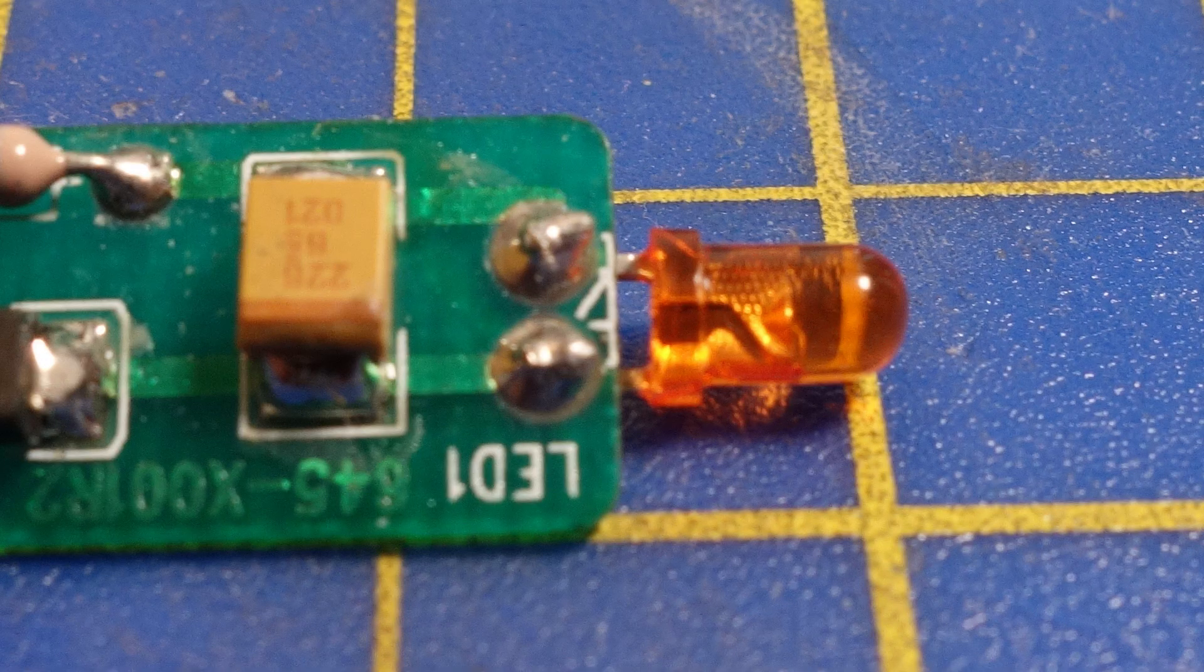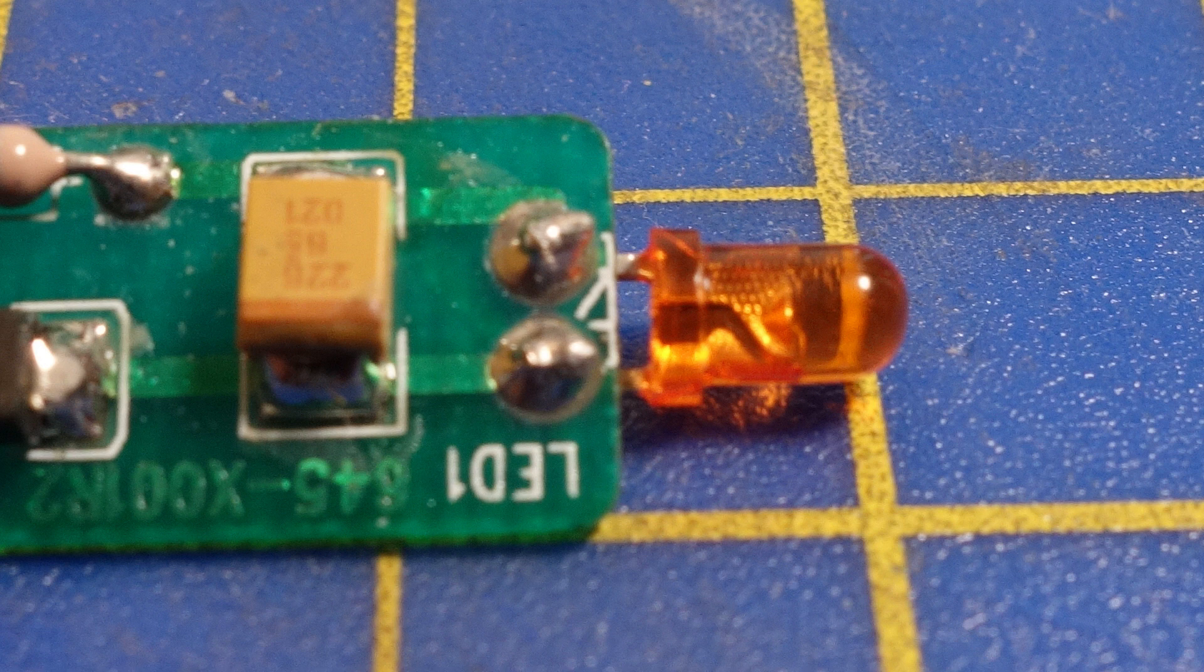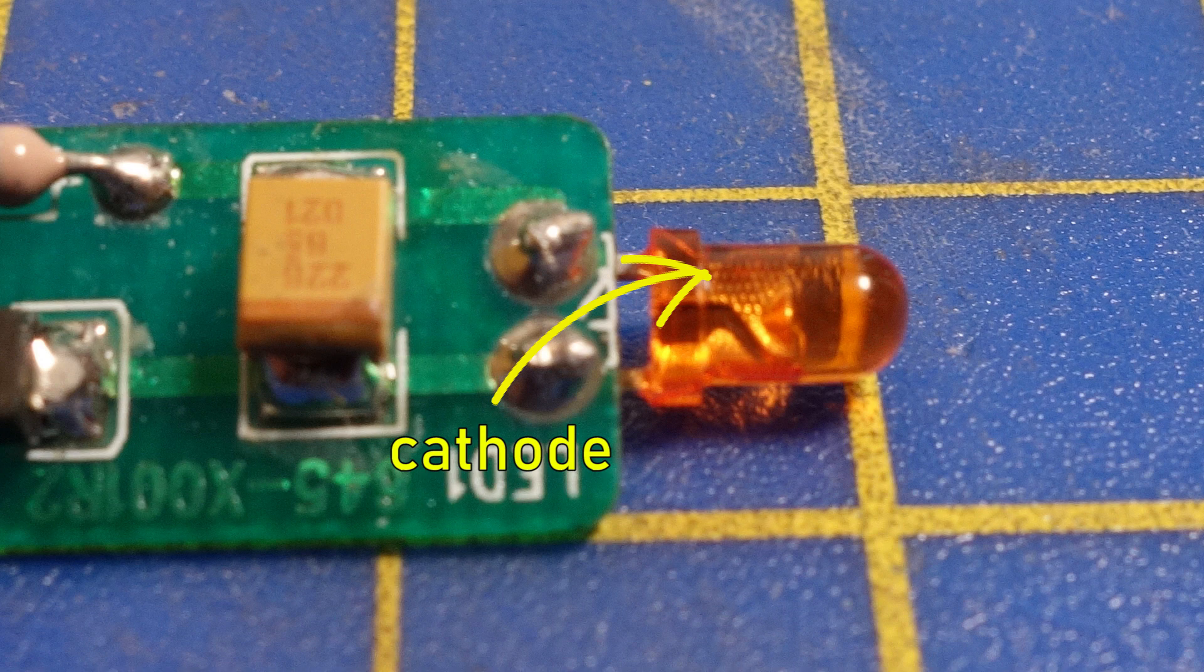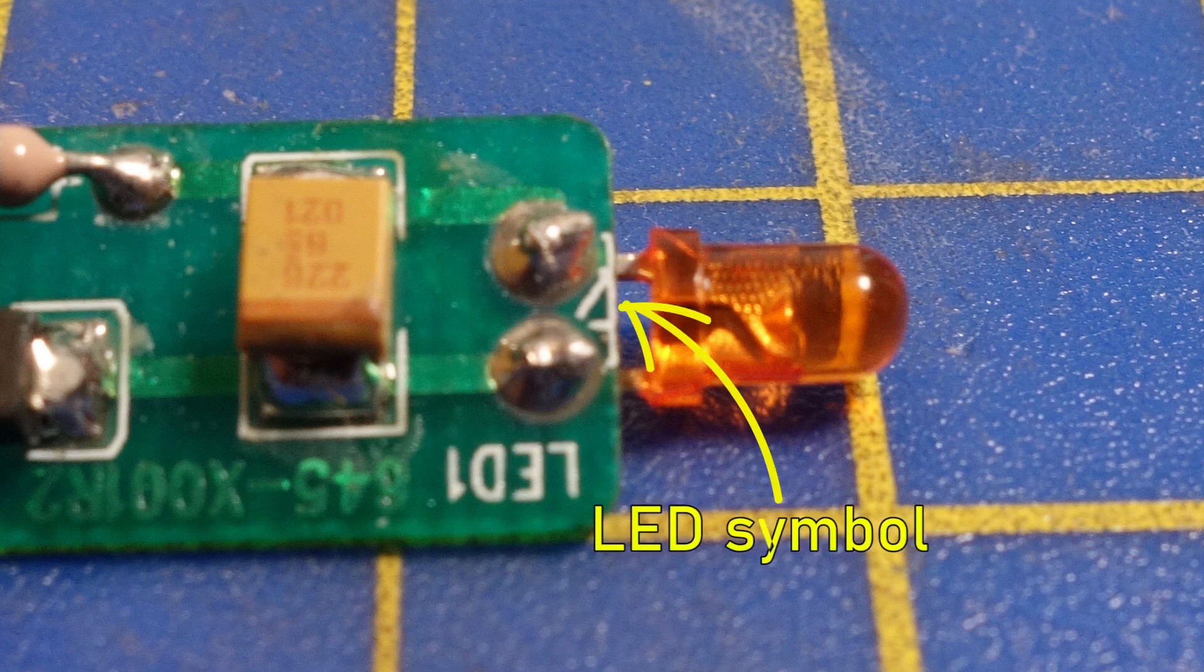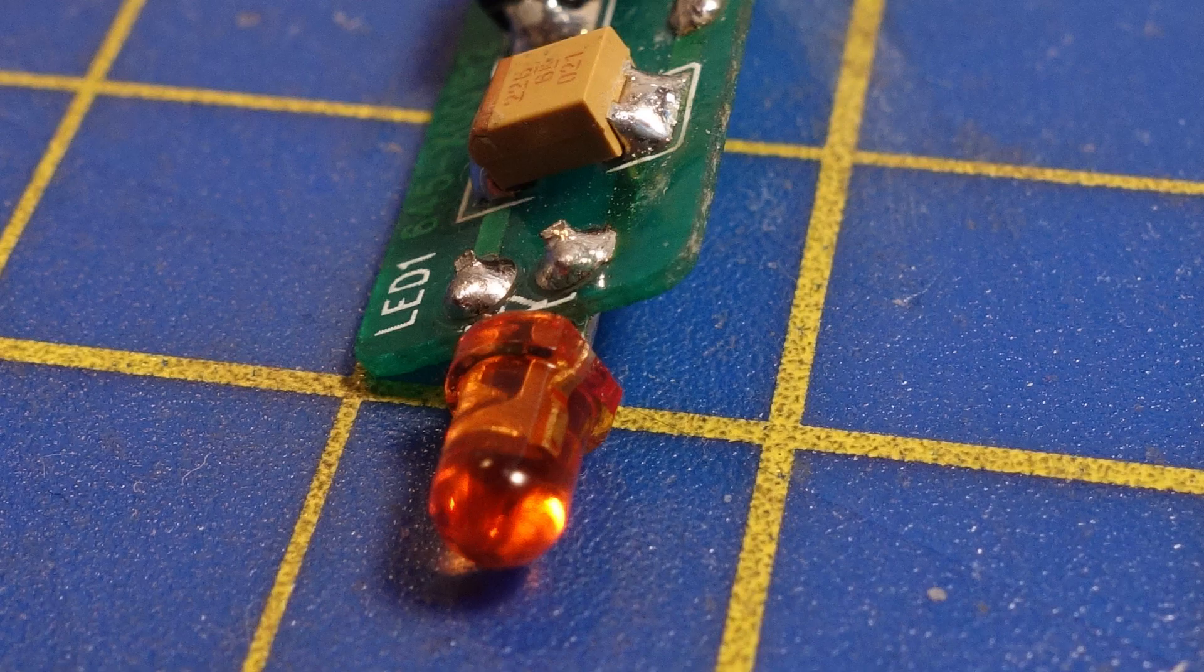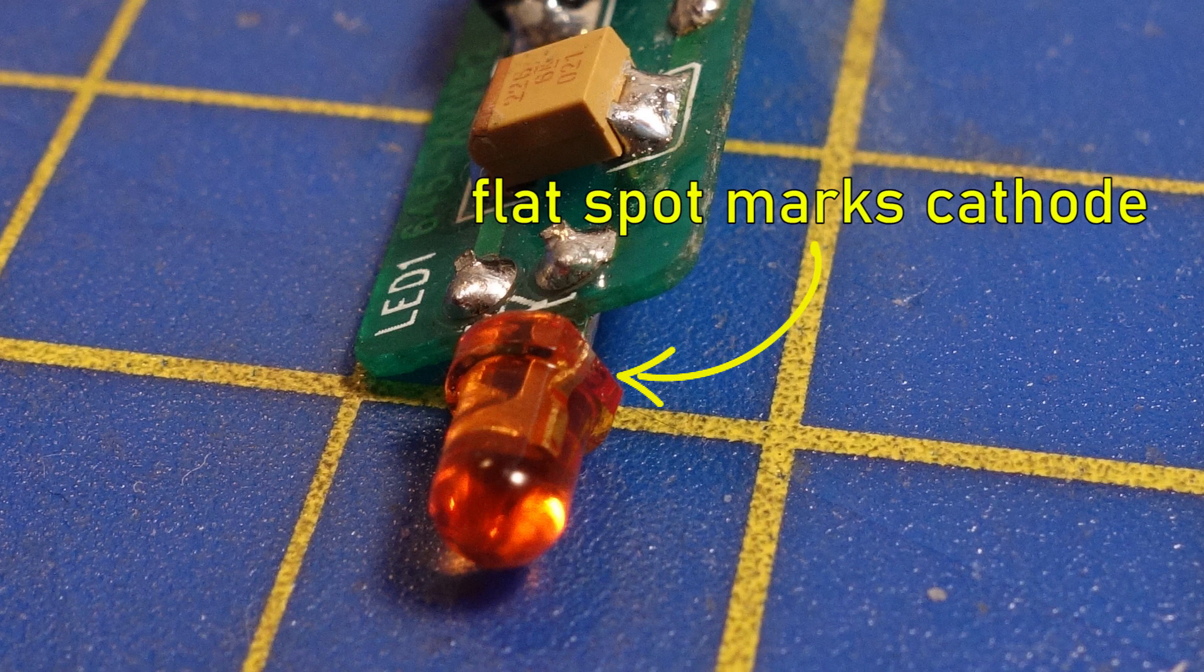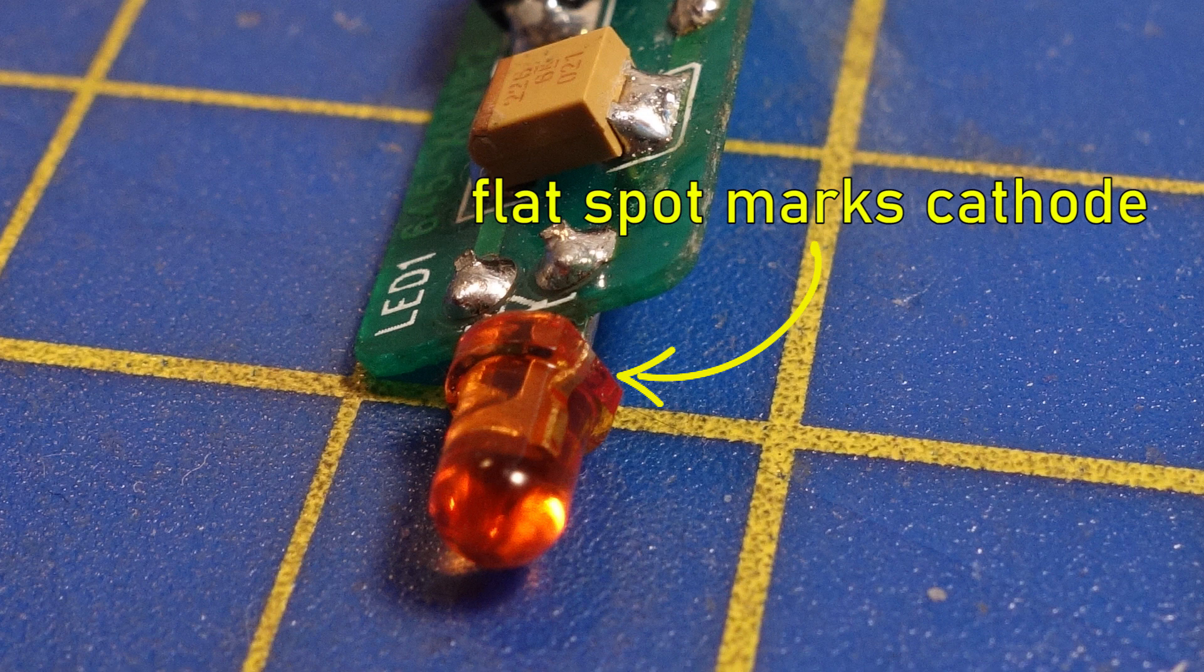Now it's time to run the wires to the headlights. With the LEDs, it's important to get the polarity right or they won't come on. The bigger contact is the cathode. On this particular board, you can also kind of see half of the LED symbol. The pointy end of the symbol designates the cathode. If you look closely, you can also see that the LED housing has a flat spot on the cathode side.